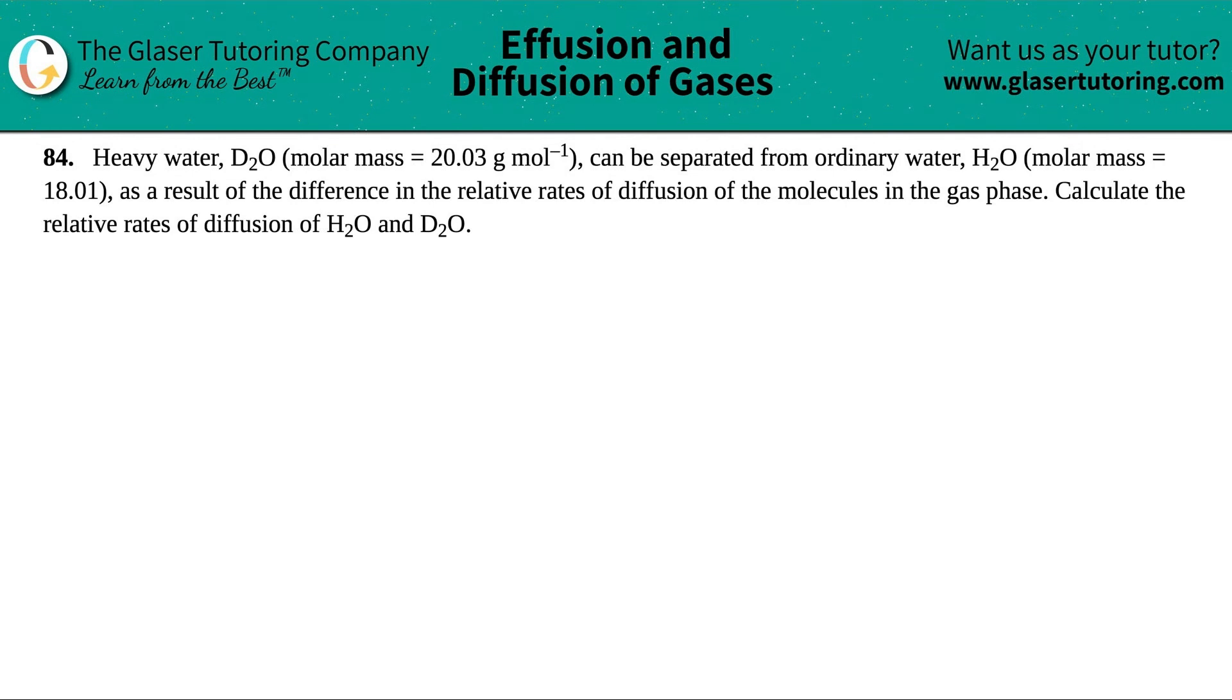Number 84. Heavy water, which is D2O, has a molar mass of 20.03 grams per mole, can be separated from ordinary water, which is H2O, which has a molar mass of 18.01 grams per mole, as a result of the difference in the relative rates of diffusion of the molecules in the gas phase. Calculate the relative rates of diffusion of H2O and D2O.